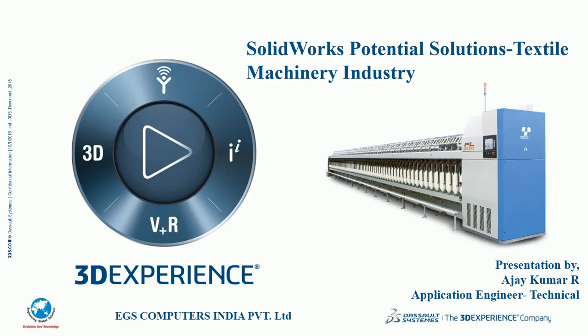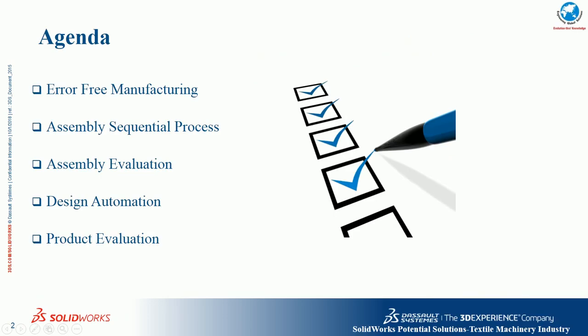Hello everyone, once again thank you for joining today's presentation. Today we are going to see how this software is a potential solution for the textile machine industry. We are going to focus on the most common challenges textile machine industries face. The main agenda covers how manufacturing drawings can be generated without errors, sequencer processes for assembly sectors, and evaluation of assemblies to reduce design time and automate the design process.